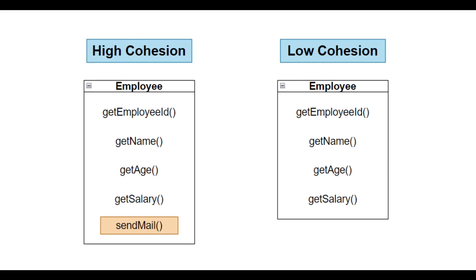Talking about low cohesion: in a low cohesion Employee class, the send mail method is moved to another class where it makes more sense. So in high cohesion you have unrelated methods that don't relate to each other, whereas in low cohesion everything relates to each other. I hope this part is clear.